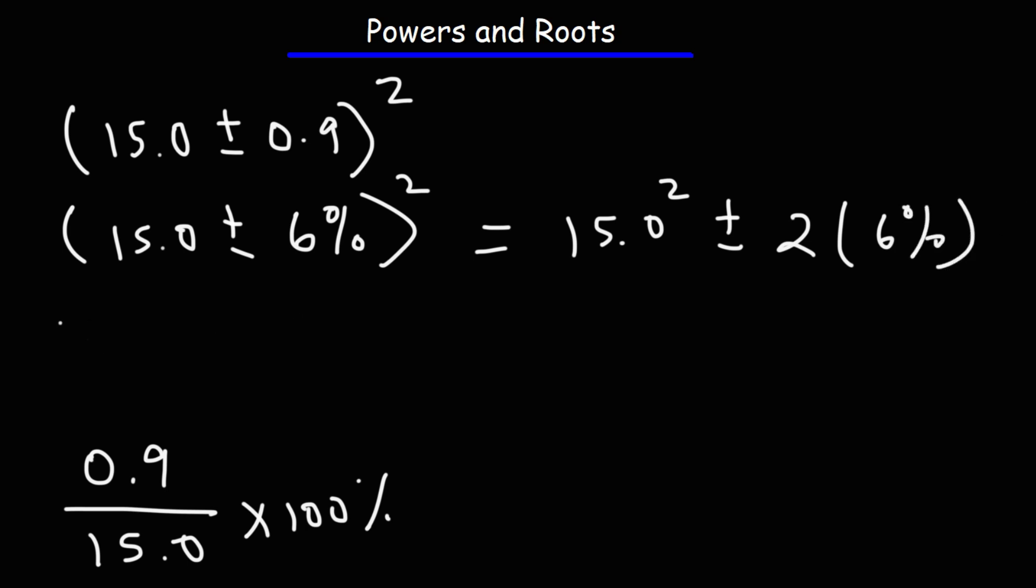So what we're going to get is 15 squared or 15 times 15. That's 225. And 2 times 6 is 12. So we get 225 plus 12 percent.